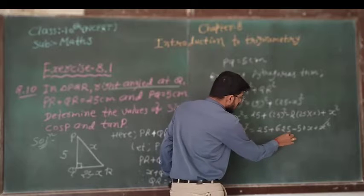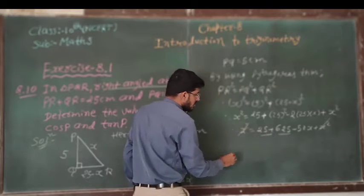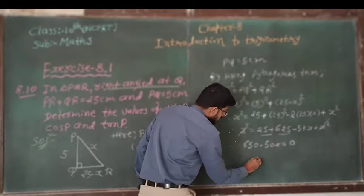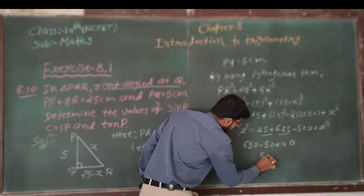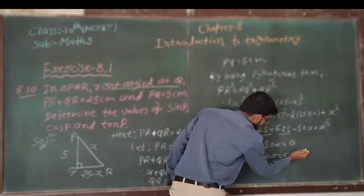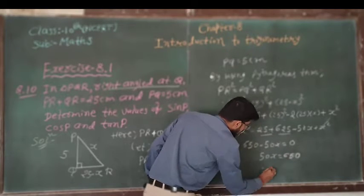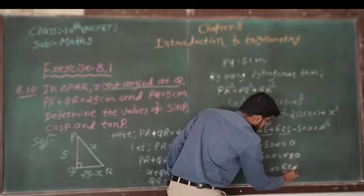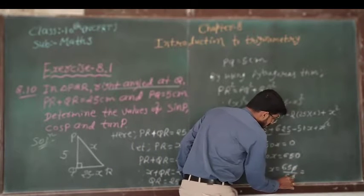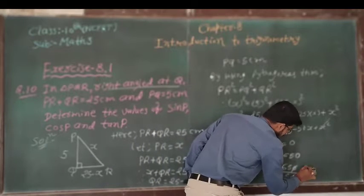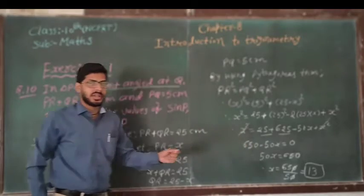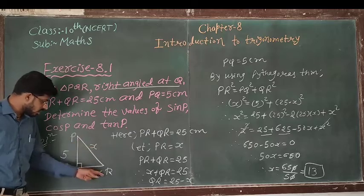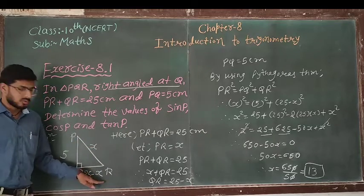X square equal to 25 plus 625 minus 50x plus x square. So 625 plus 25 gives 650 minus 50x equal to 0. Therefore, 50x equal to 650. So the value of x equal to 650 upon 50, which is 13. So it means PR is 13 and QR is 25 minus 13, which is 12.